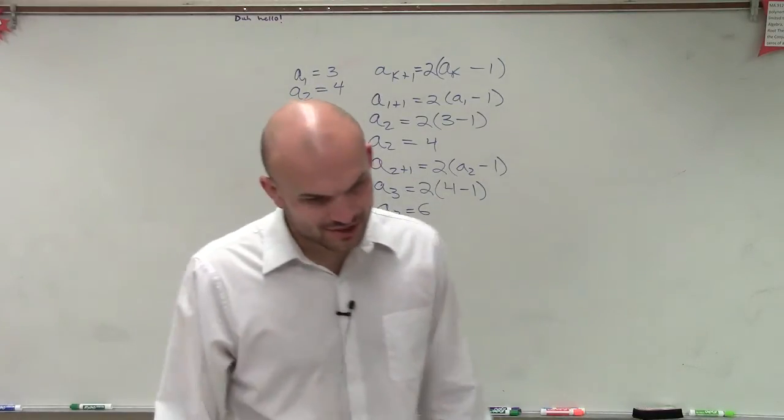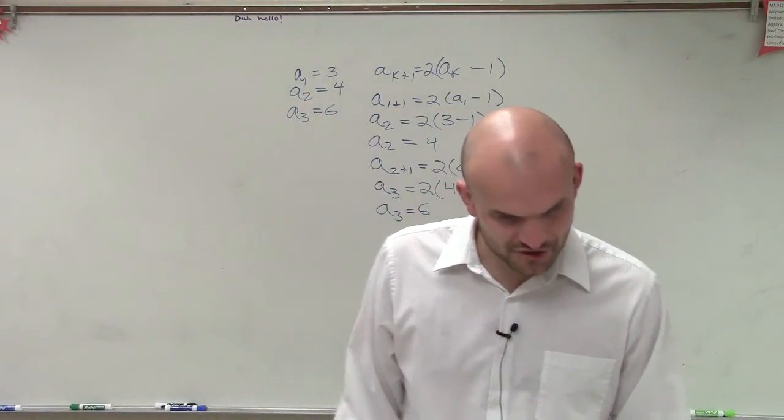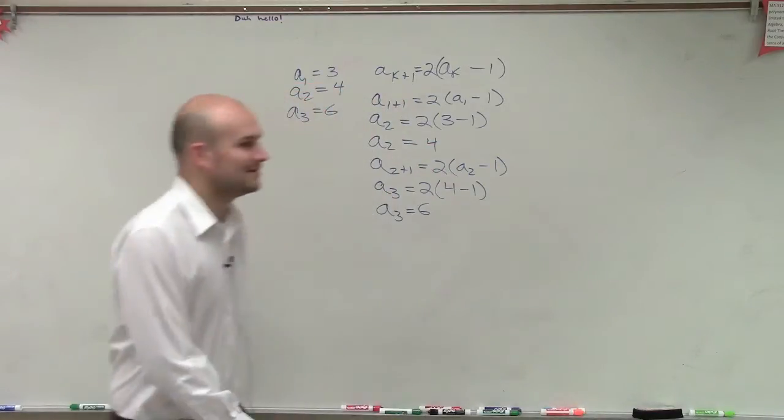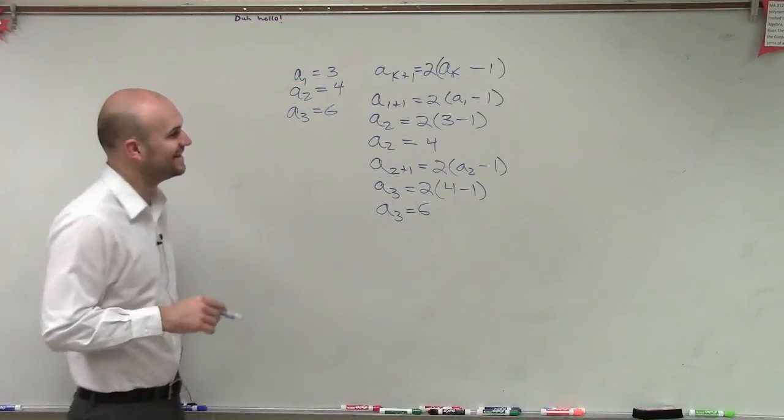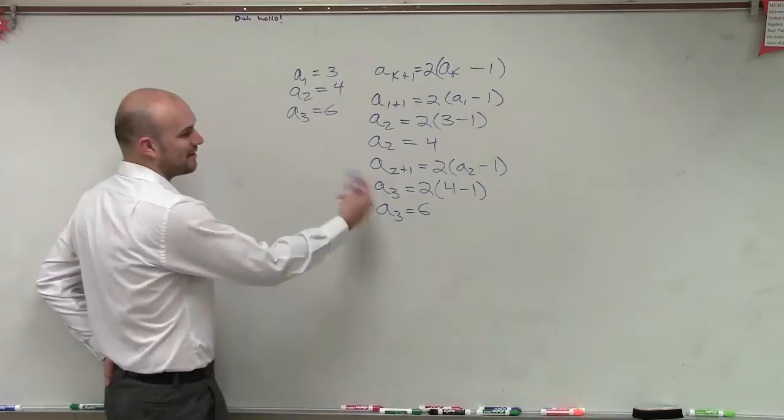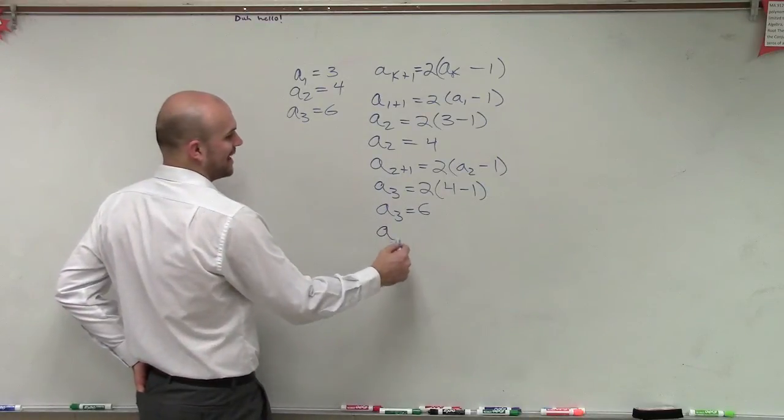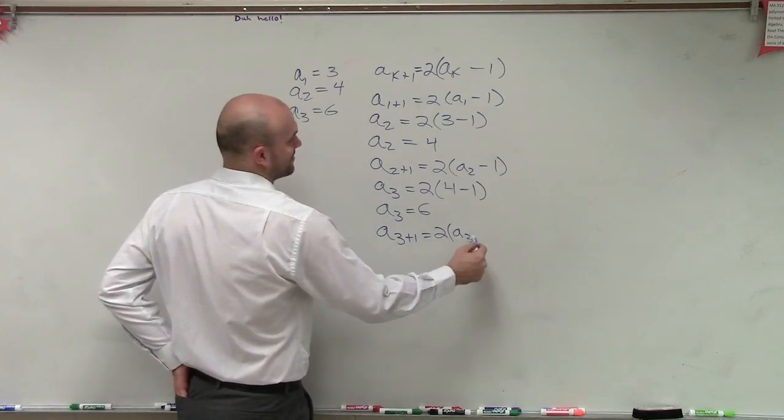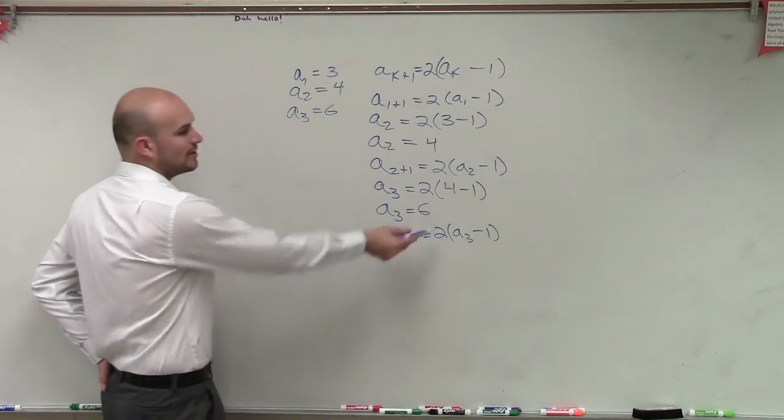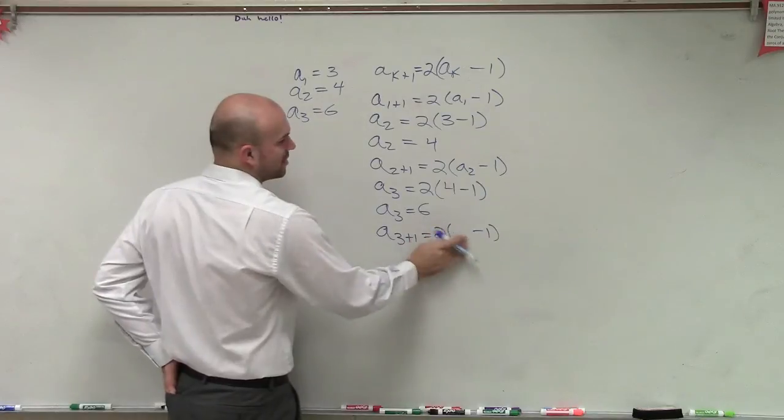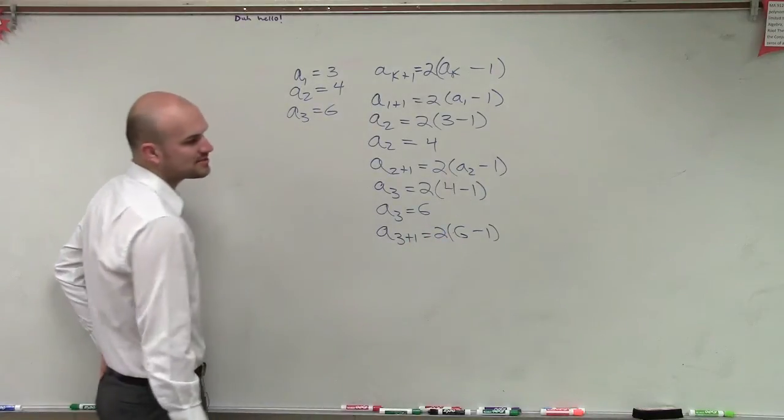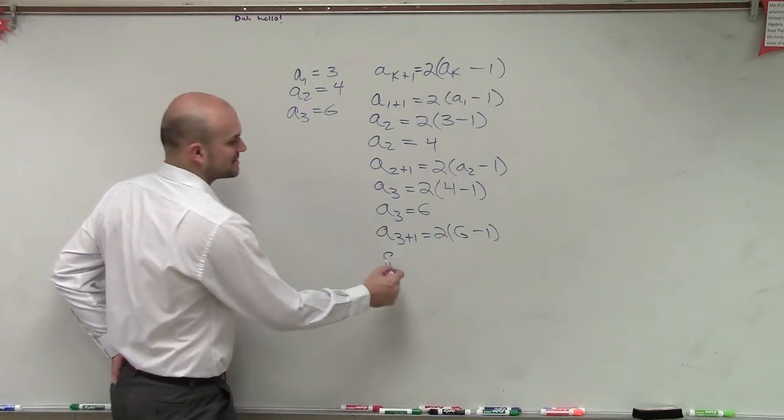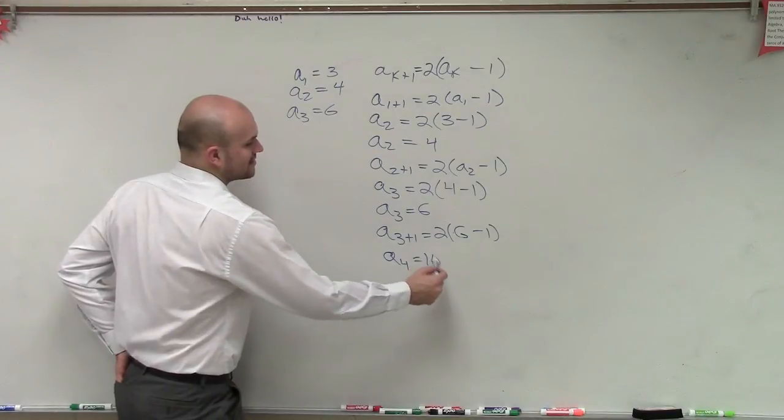And the question is actually asking us, find the first four terms. So we'll now go ahead and find the last one. So if I wanted to plug in a sub 3, I'd do a sub 3 plus 1 equals 2 times a sub 3 minus 1. Well, we know a sub 3 is now equal to 6, so I'll replace that. 6 minus 1 is 5, 5 times 2 is 10. So we could say a sub 4 equals 10.